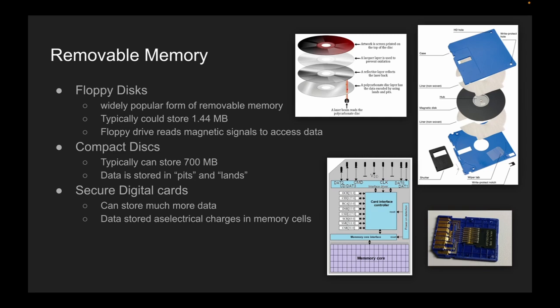To start off, we have floppy disks. They were first introduced in the early 1970s by IBM and quickly became popular for storing and transferring data between computers. They were small, portable, and had a decent capacity for the time. Floppy disks were used for everything from software installation to data backups, and in the 80s and 90s they were the go-to storage device for most people. However, they could only store up to 1.4 megabytes, which became obsolete later on.